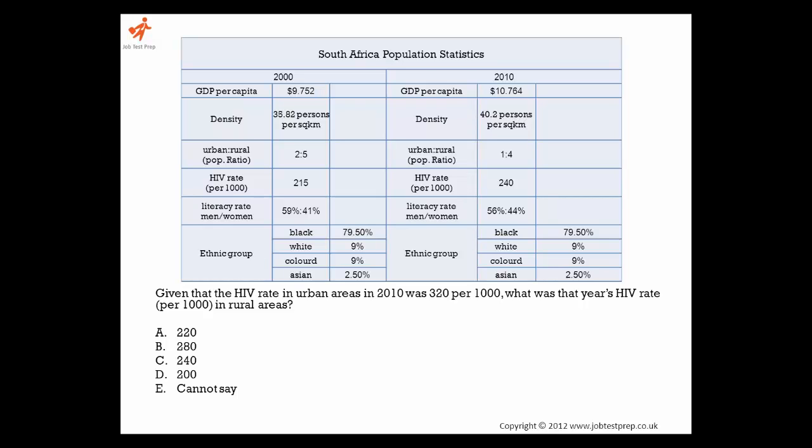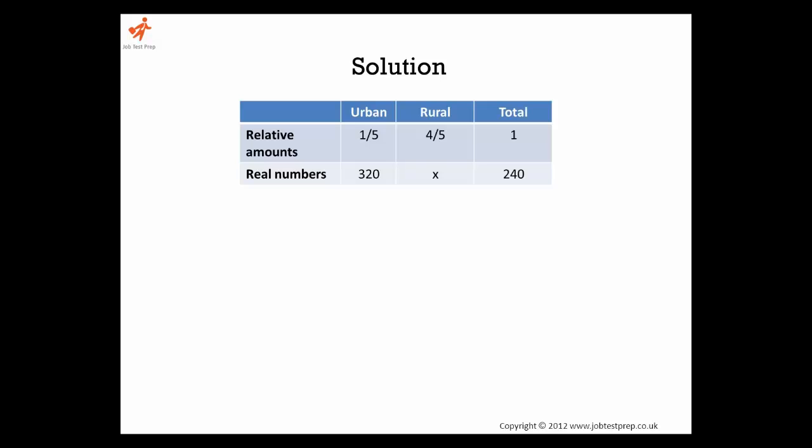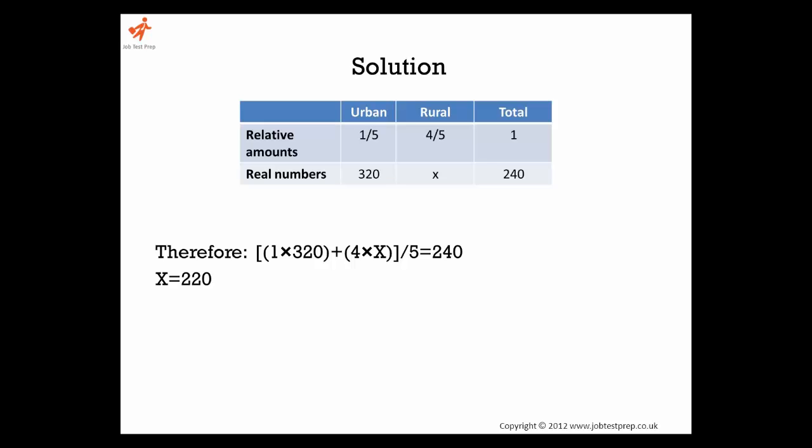We now have to input this information into an equation of weighted averages. The proportion of the urban population is a fifth and the proportion of the rural population is four fifths. Inputting this into a weighted average calculation gives us one times 320 plus four times the rural rate of HIV divided by five which is 240. This gives us that the rate of HIV per thousand is 220.